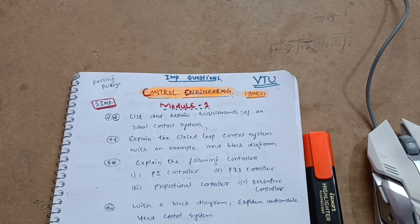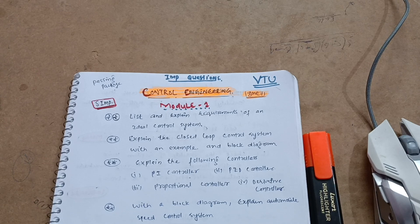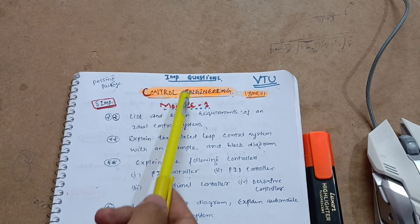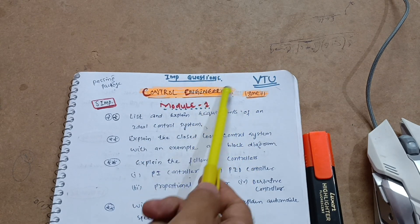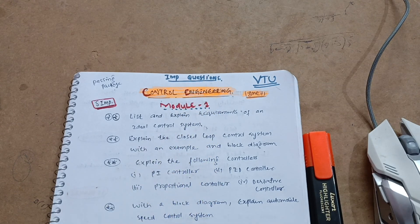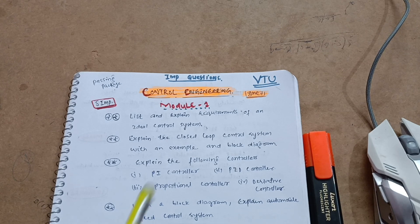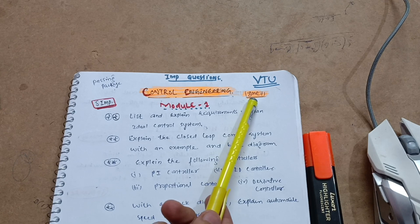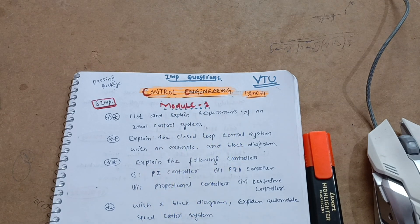Hello everyone, welcome back to my channel, hope you are all doing well. After probably four months, I am making another passing package series for the 2018 scheme students. Let's take the first subject: Control Engineering — important questions, passing package, how to pass Control Engineering. Most students have concern about this particular subject as it is one of the toughest subjects, but don't worry. The subject code is 18ME71.